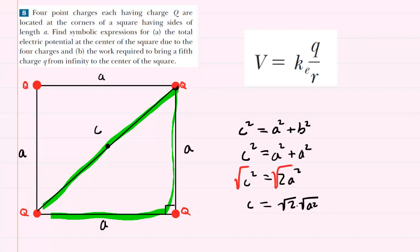Notice, of course, the square root of A squared is just A, so we might want to write that as just radical 2A.